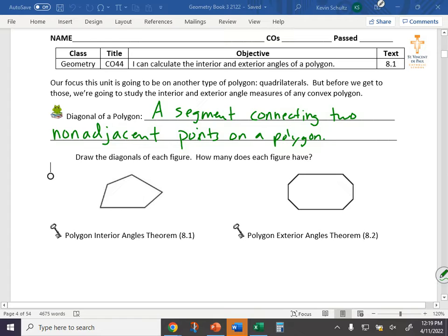Last unit, we talked about the word adjacent in the context of sine, cosine, tangent. Adjacent means next to, so what would non-adjacent mean? If adjacent means next to, non-adjacent would mean not next to, right?